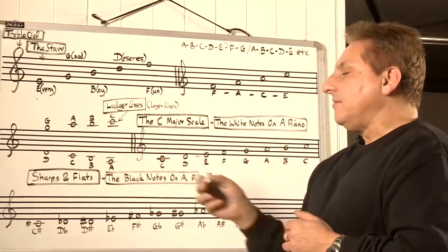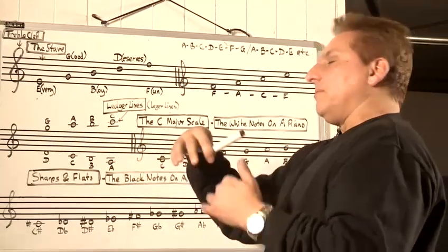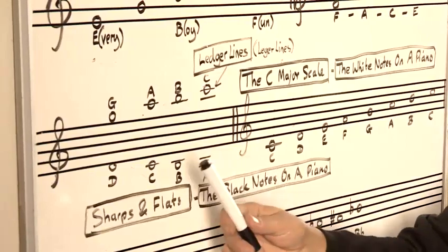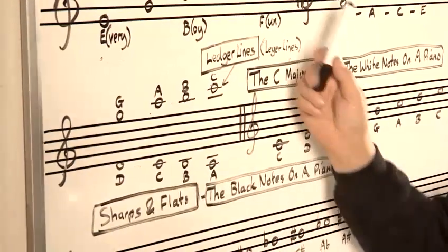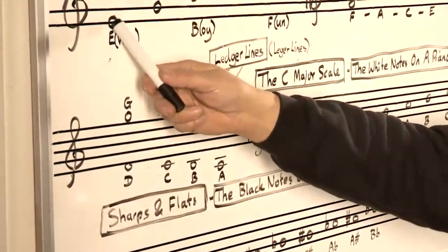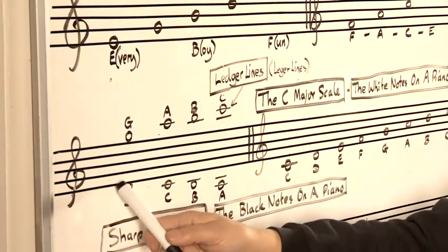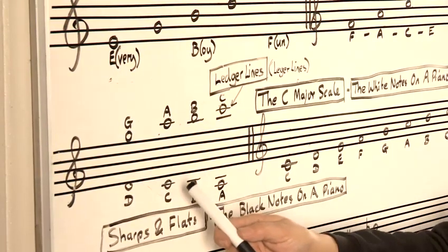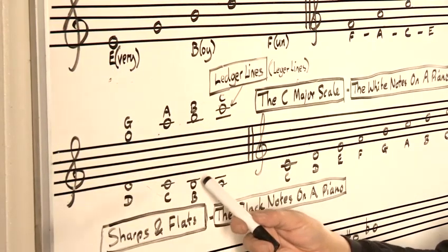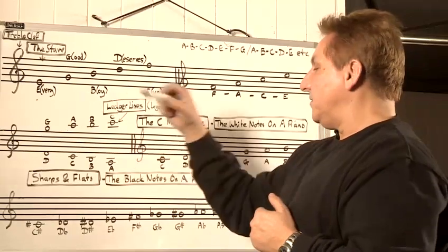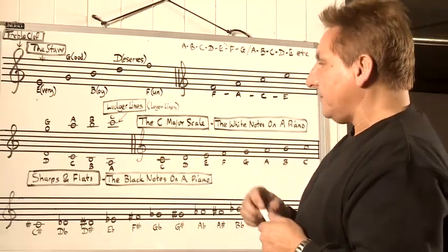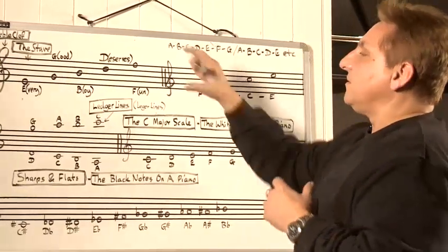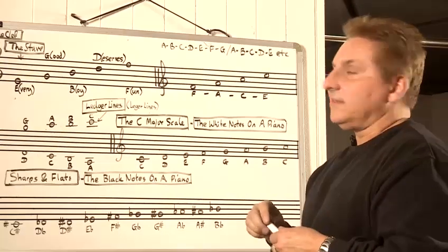Going down, because you're going backwards, you actually go reverse in the alphabet. So you would have E on the bottom line, then you would go back to D, then back to C, back to B, back to A as you go down. So that's how the notes are named on the stave.